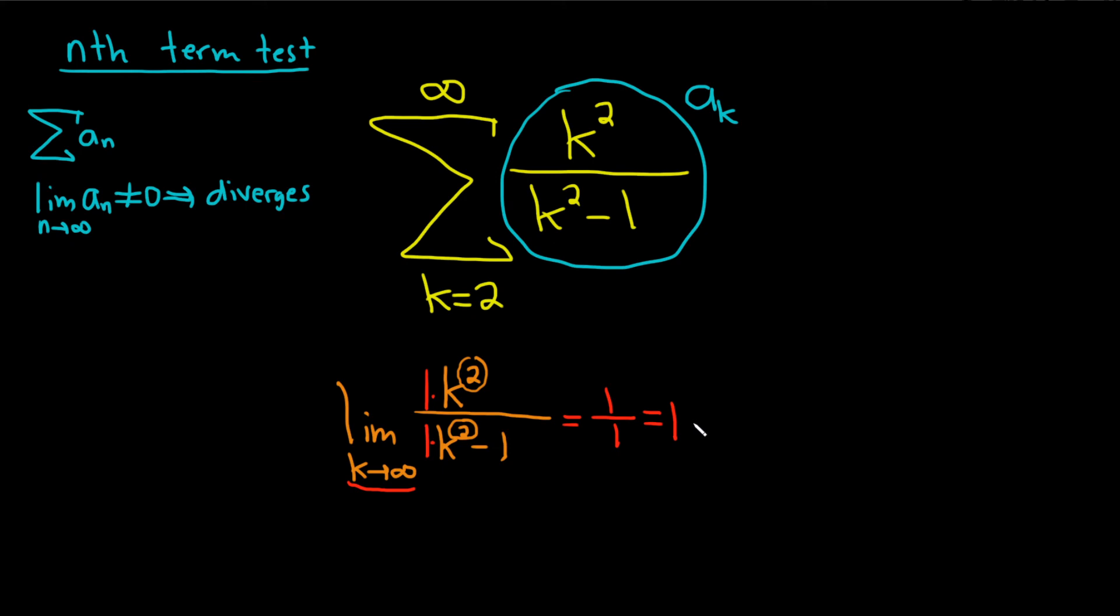And the most important part about this answer is that it is not equal to 0. So we can apply our test. So our series diverges by the nth term test. That is the most important part. Super key. And that would be a complete solution. I hope this video has been helpful to you.